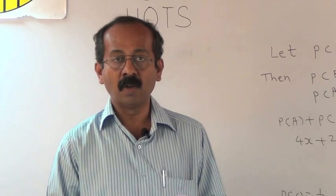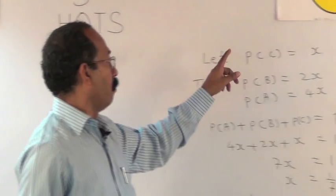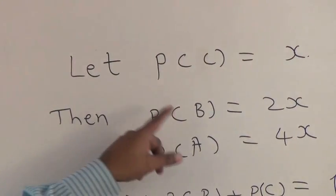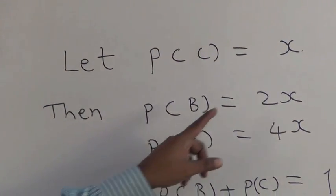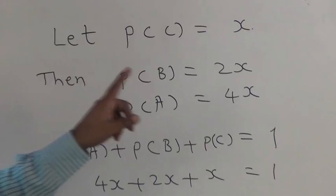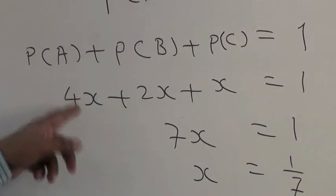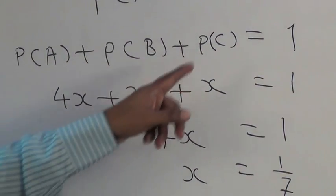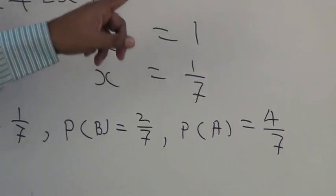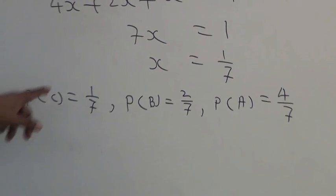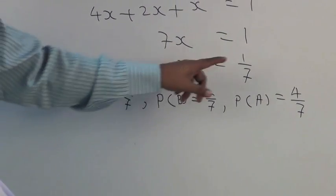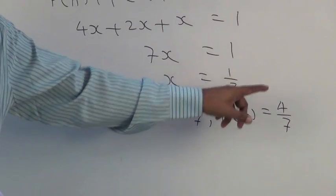Let the probability of C equals x. So the probability of B will be 2x, and the probability of A equals 4x. Probability of A plus probability of B plus probability of C equals 1. So 4x plus 2x plus x equals 1. So 7x equals 1, which means x equals 1 upon 7. Therefore, probability of C equals 1 upon 7, probability of B equals 2 upon 7, and probability of A equals 4 upon 7.